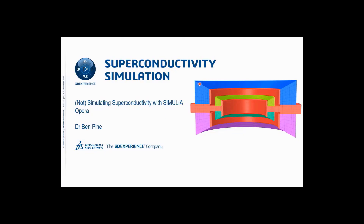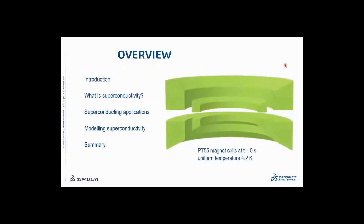This is a cut-through of a magnet that was built at Rutherford Appleton Laboratory in the 1970s called the PT-55 superconducting magnet, which was a detector magnet for a particle accelerator experiment there. We'll return to this magnet a few times during the talk, particularly at these overview slides.